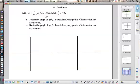Okay, here's a rational function past paper problem. It says sketch the graph of f of x, clearly label intersections and asymptotes.